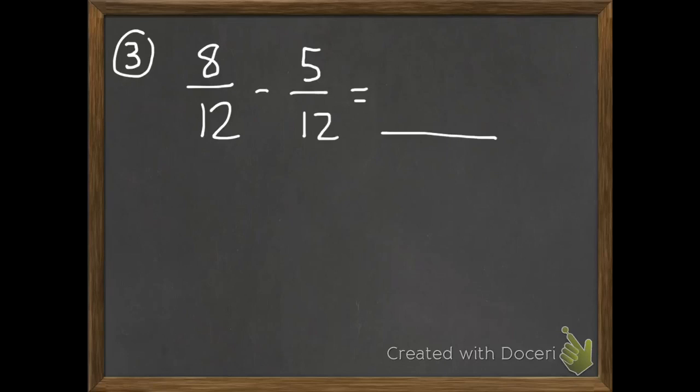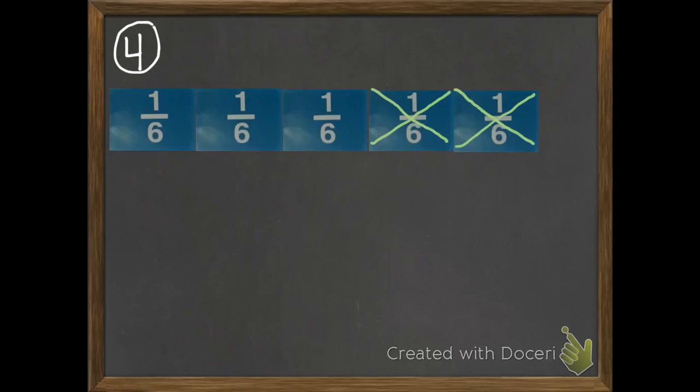Number 3: 8 twelfths subtract 5 twelfths. Last of all, we have our fraction tiles here. I want you to write the equation for this picture and then solve.